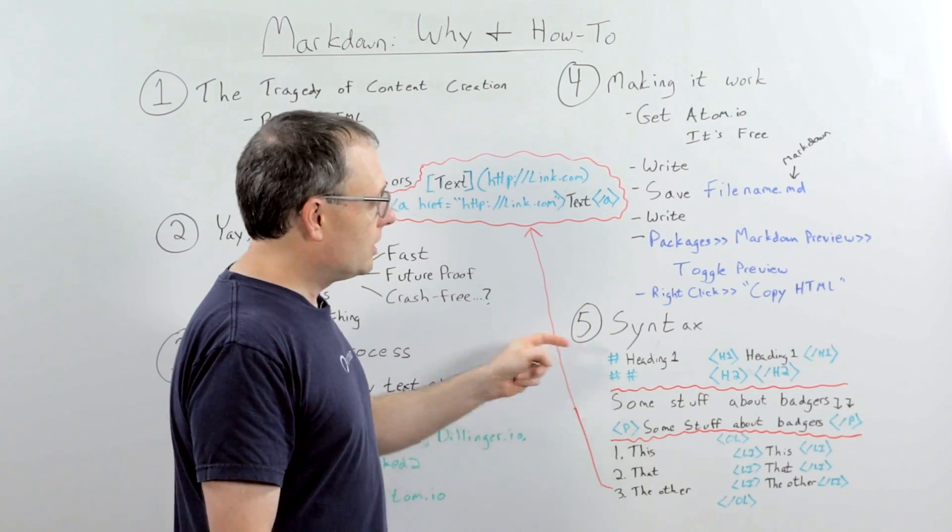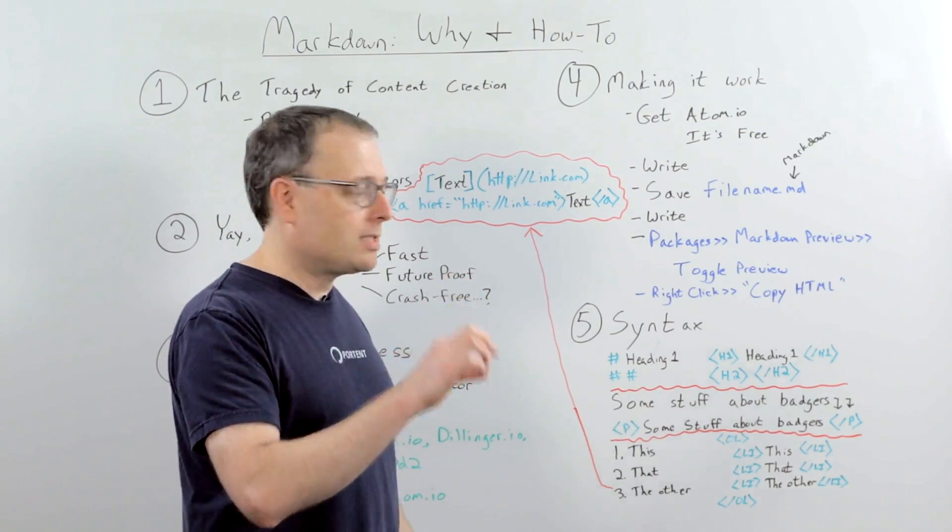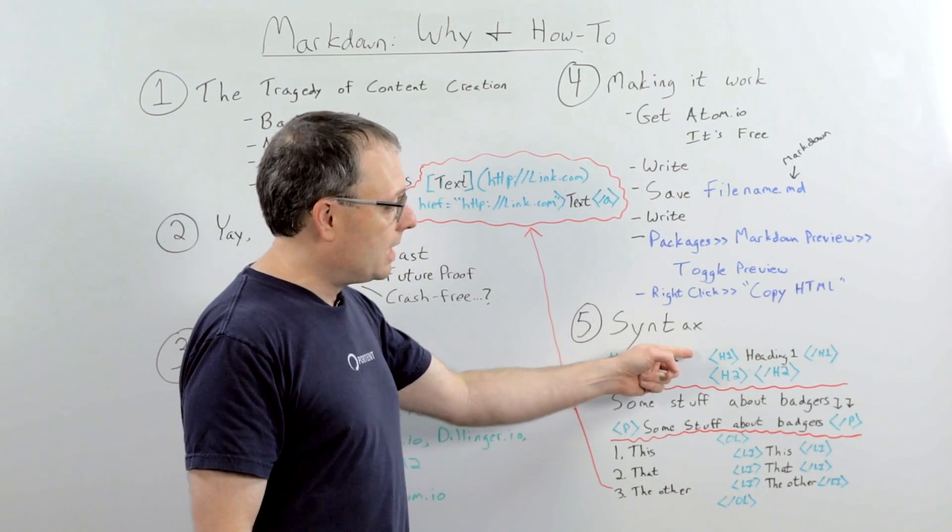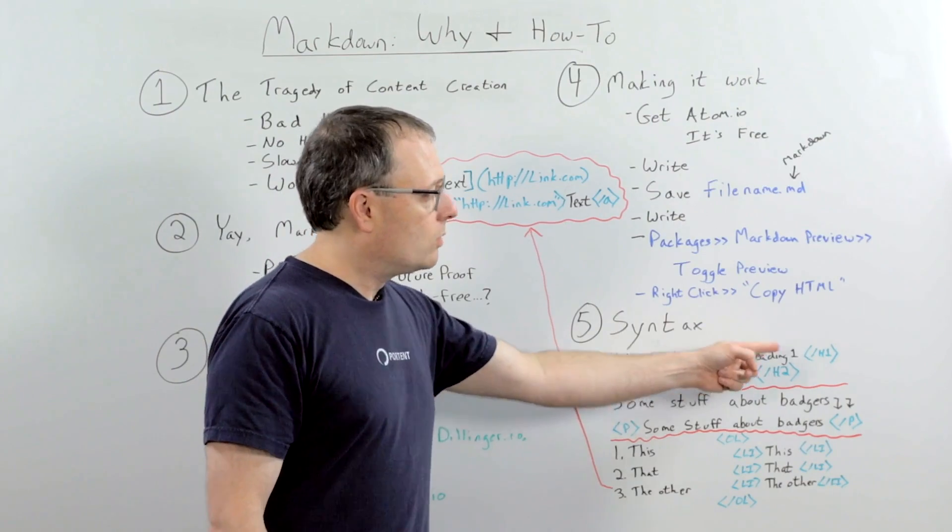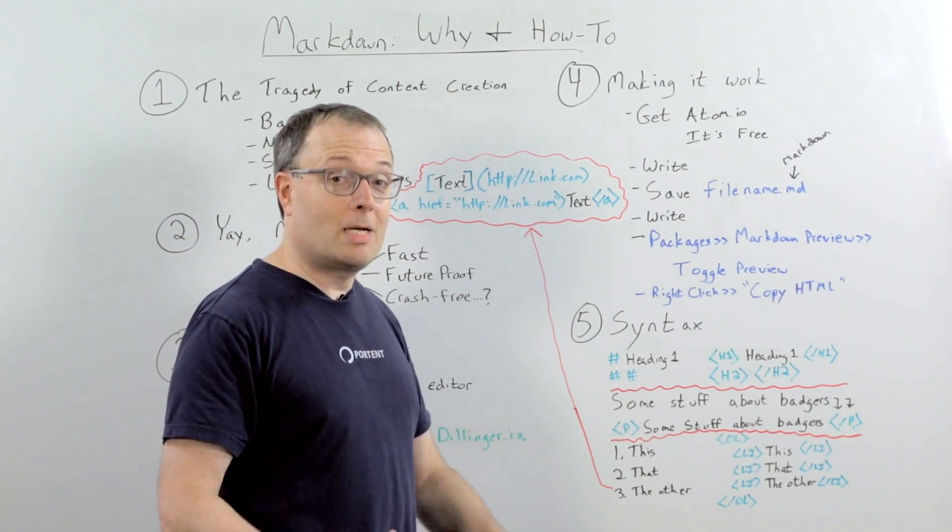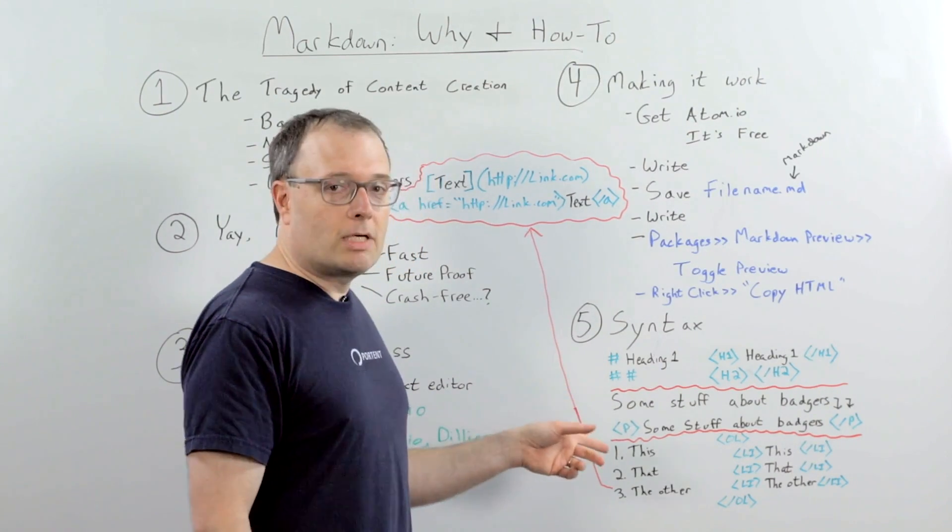But just as an example, if you want to do a level one heading, you do a single pound sign or a hash, a space, and then whatever your text is. When you convert it to HTML, it will automatically become H1, heading one, closing H1. Same thing with H2. You just do two hashes. You can imagine what you do for H3. It's three hashes.